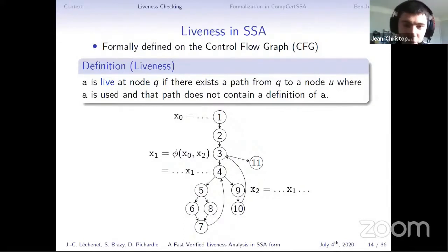Before going further, I also need to introduce the formal definition of liveness. Before I gave you only the intuition. Formally, it is defined on the control graph as follows. We say that a variable is live at node U if there exists a path from U to a node where A is used, and the path does not contain a definition of A.